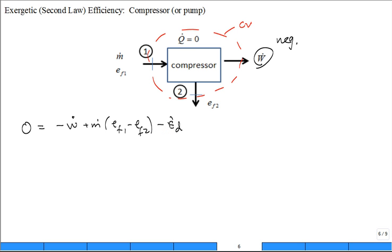But I'm going to ask the question, EF2, is it equal to EF1? Is it greater than EF1 or less than EF1 for the compressor?